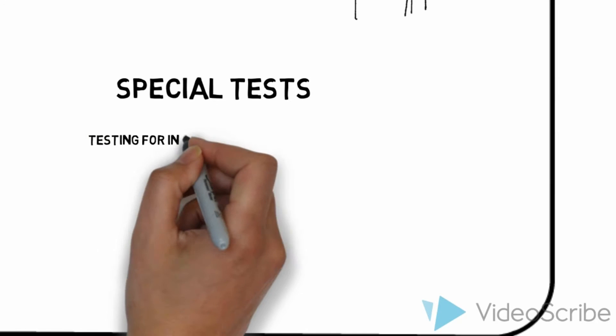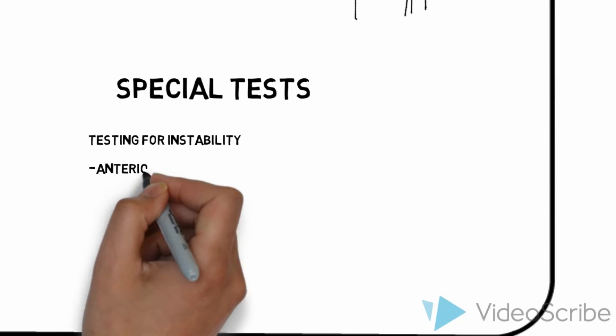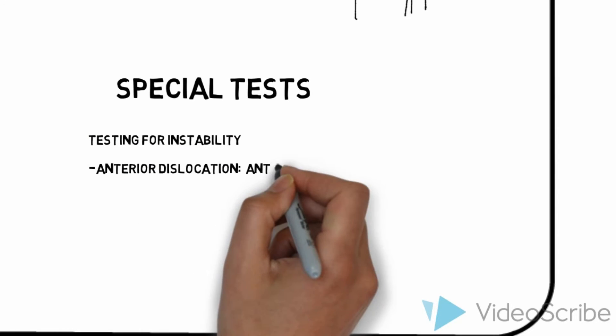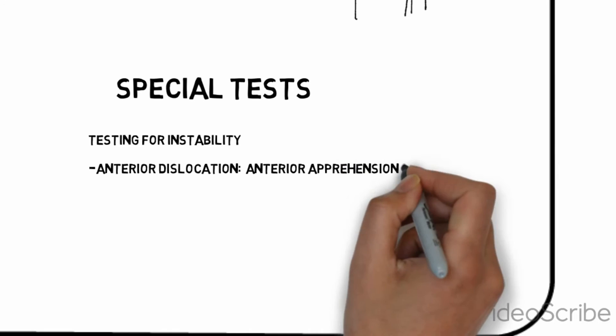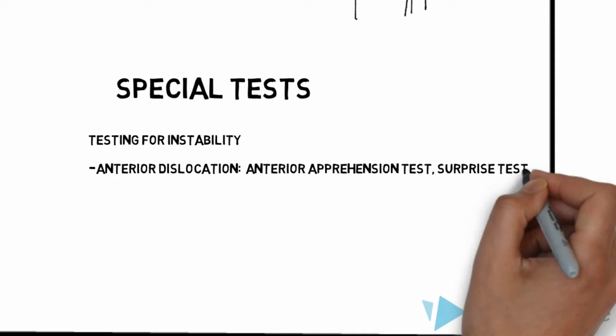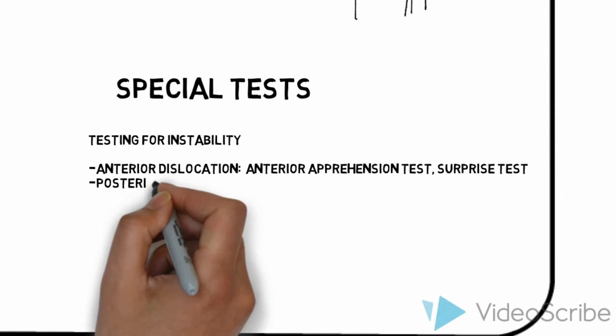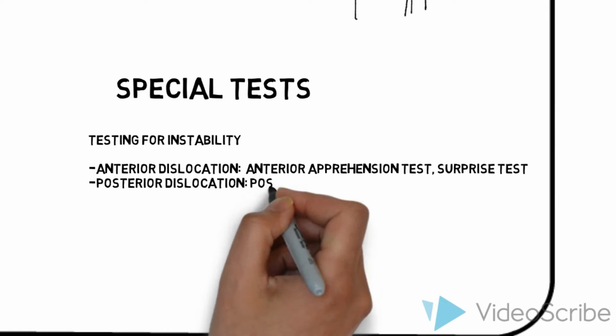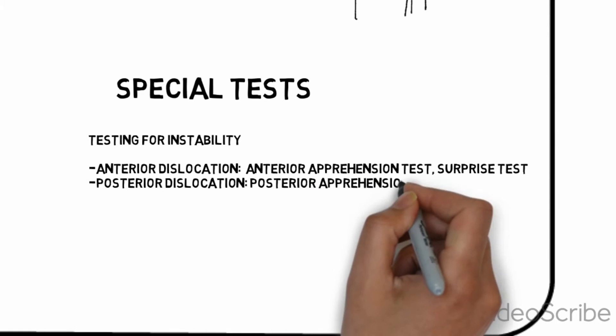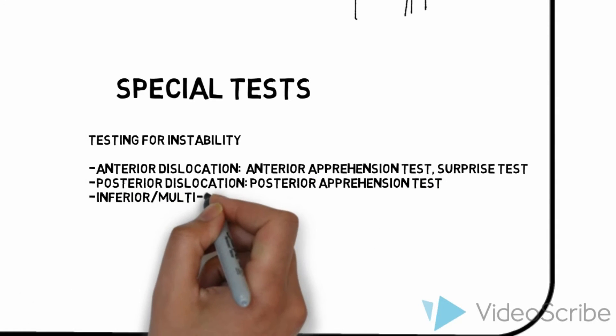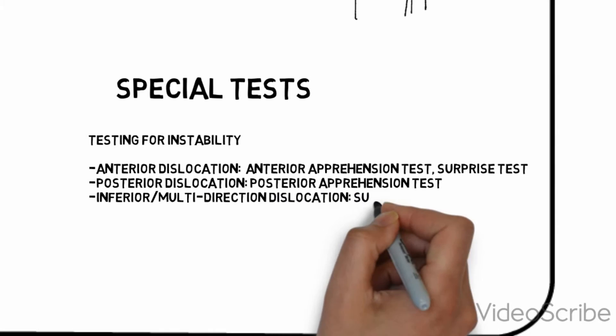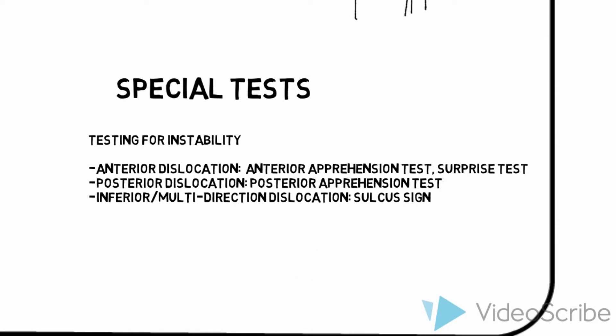For move, do a basic screen of the shoulder initially, then focus on the affected side. There are a few special tests for shoulder dislocation or instabilities. These include an anterior apprehension test and a surprise test for anterior dislocation. For posterior dislocation, a posterior apprehension test can be done. For inferior or multidirectional dislocation, a sulcus sign can be elicited on clinical examination.